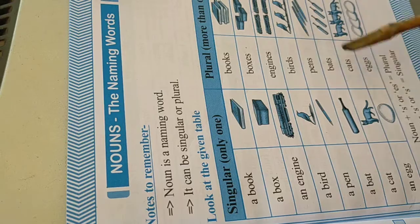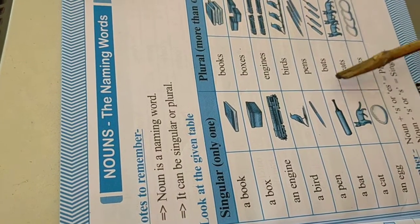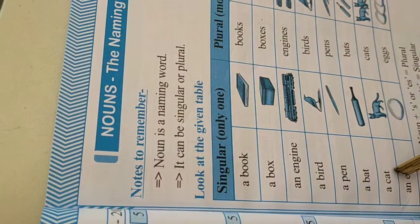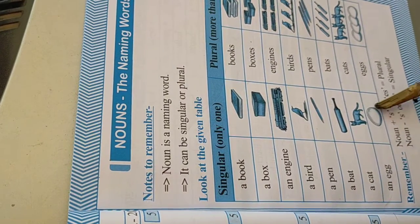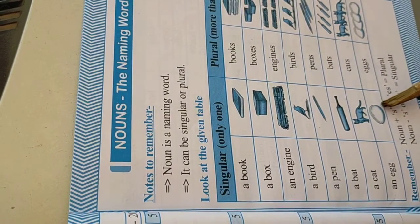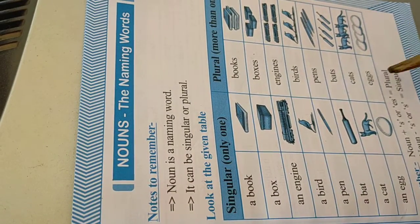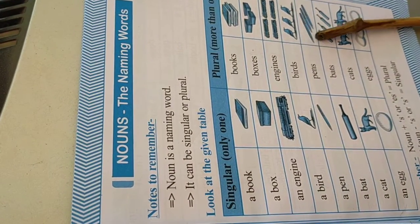Here is a pen, there are three pens. A bat is here and four bats are here. A cat - one cat is here and three cats are here. And there are four eggs. That is the singular and plural.